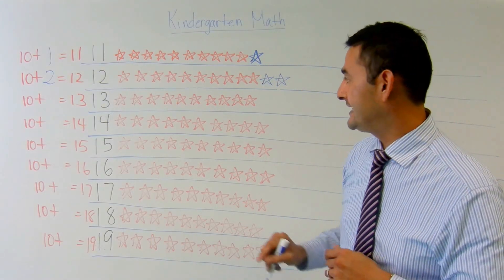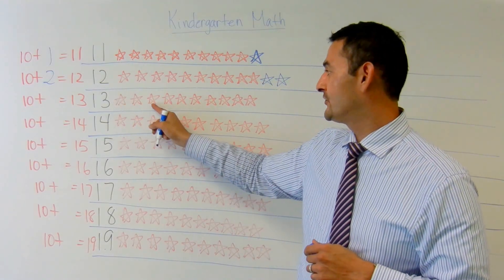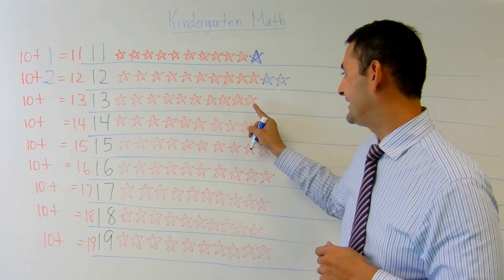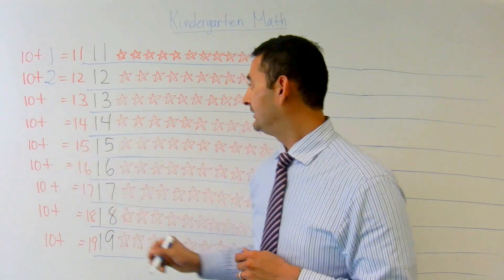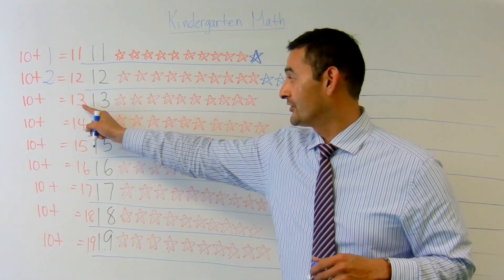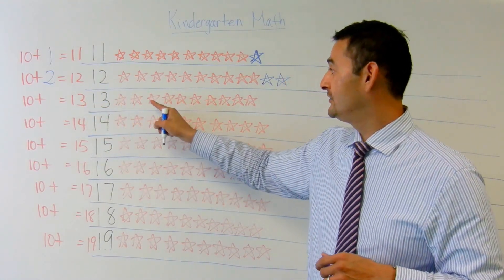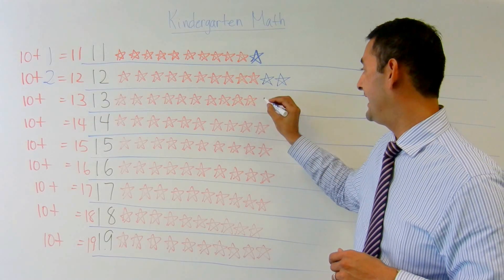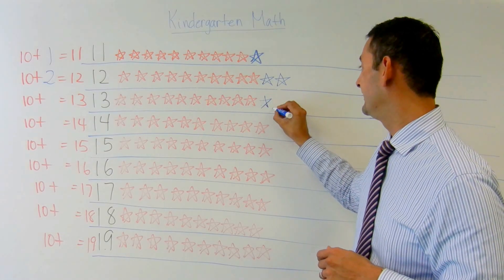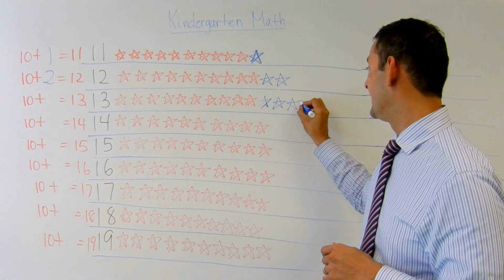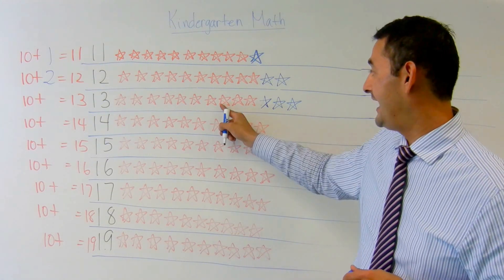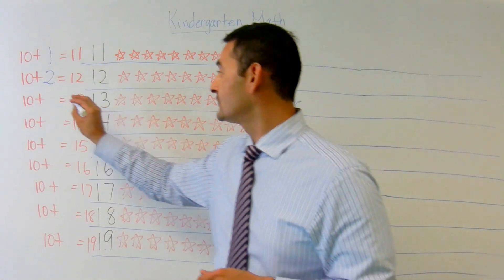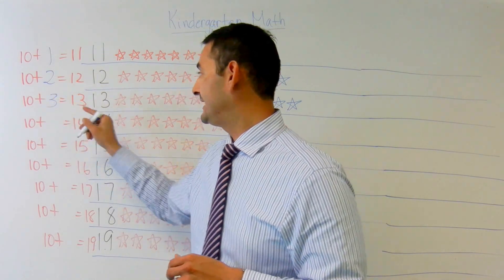Now let's take a look at 13. I've got 1, 2, 3, 4, 5, 6, 7, 8, 9. I've got 10 ones plus what is going to equal 13. 1, 2, 3, 4, 5, 6, 7, 8, 9, 10, 11, 12, 13. So 10 ones plus 3 more ones equals 13.